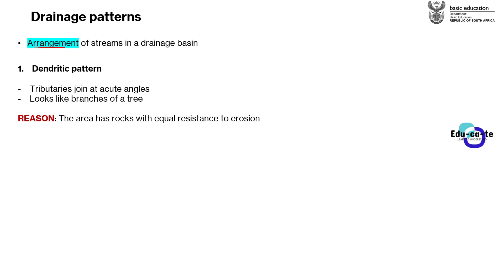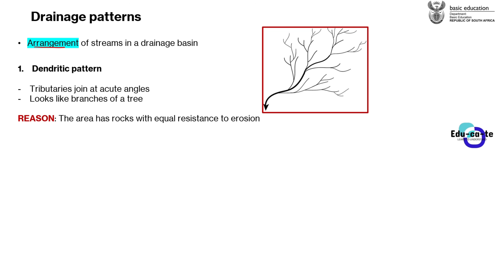The first type of drainage pattern is the dendritic drainage pattern. In a dendritic drainage pattern, the tributaries join at acute angles — angles below 90 degrees. When two tributaries meet, the space between them, which is the angle, is less than 90 degrees. So tributaries meet at an angle that is acute.